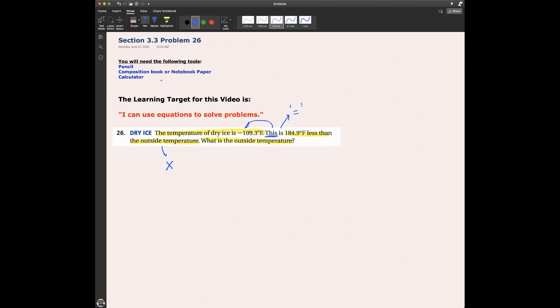That's telling us, hey, people, figure out what x is. All right, so let's write down an equation. So I know what the temperature of dry ice is. It's negative 109.3 degrees Fahrenheit. And that equals what?